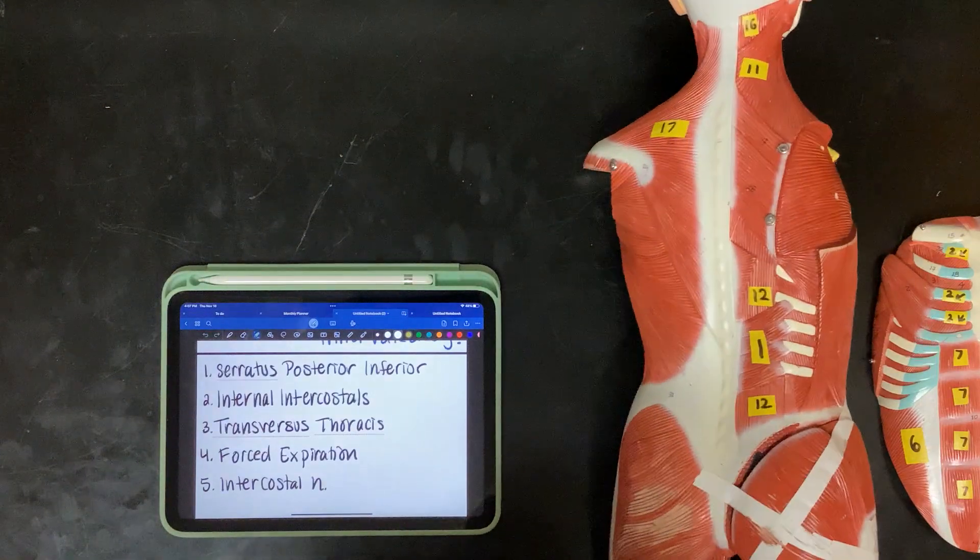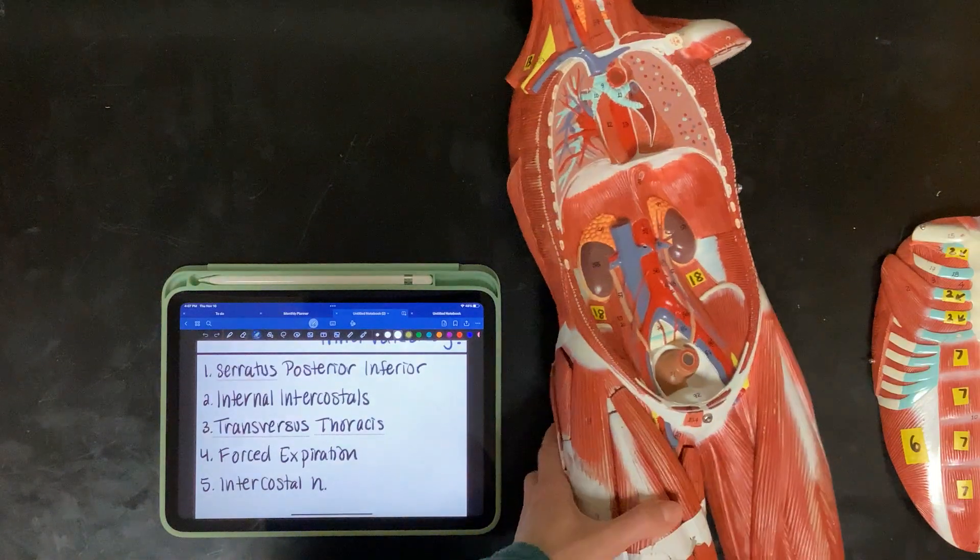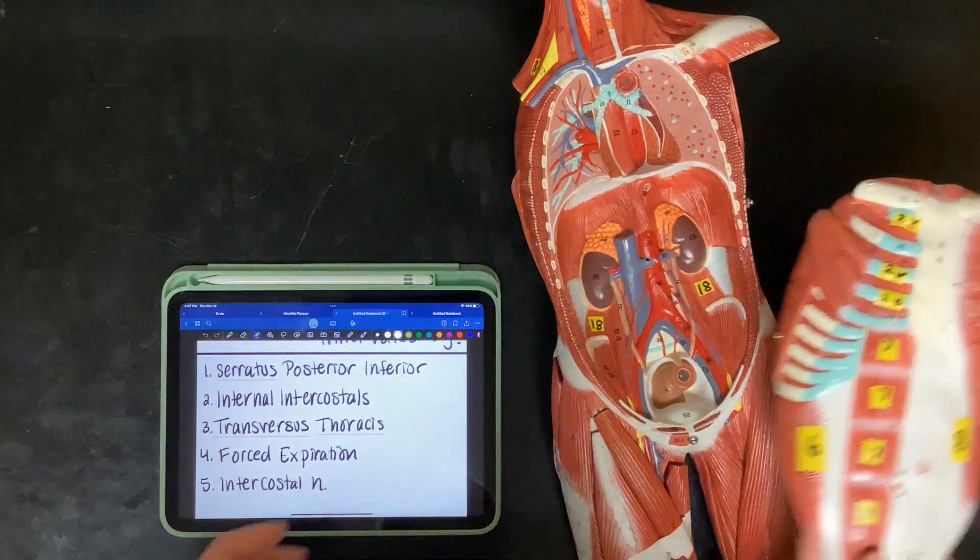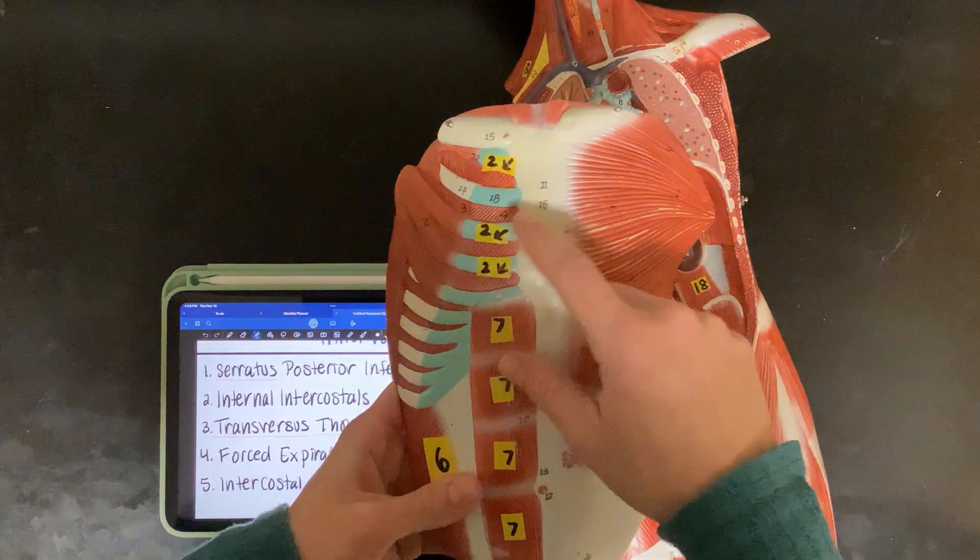One, we have serratus posterior inferior. Two, on the chest plate, we have our internal intercostals. So here you can tell by the fiber direction.